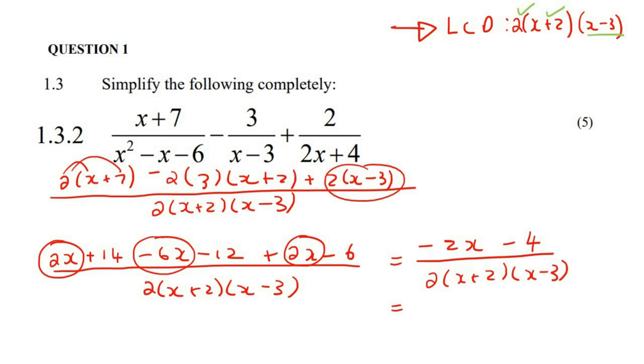We can take out a negative 2. And then you'd be left with x plus 2. How did I do that? Well, check here. If you multiply these two together, what do you get? Negative 2x. And if you multiply these two together, you get negative 4, which is what we had.